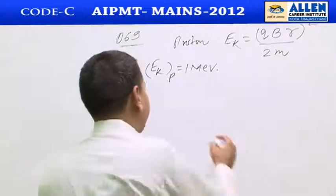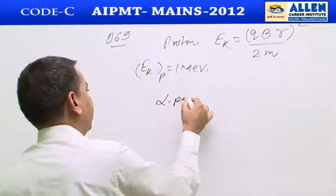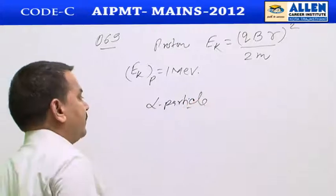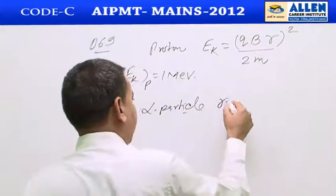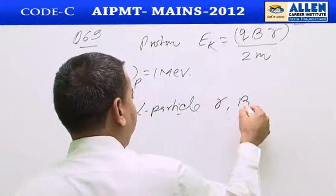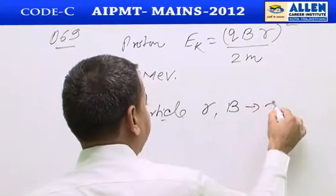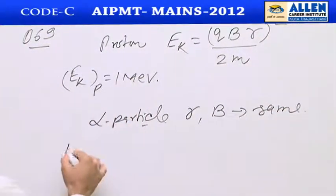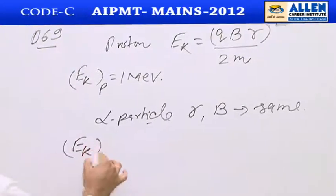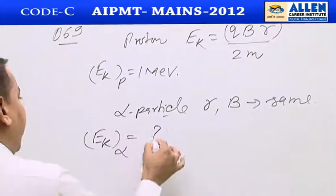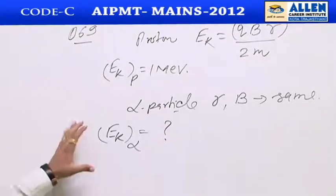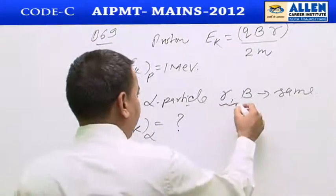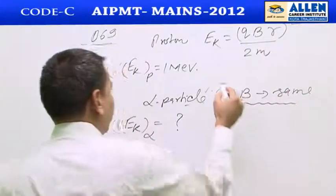We need to find the kinetic energy of an alpha particle moving in the same magnetic field with the same radius. Since r and B are the same for both particles, the kinetic energy is proportional to q²/m.